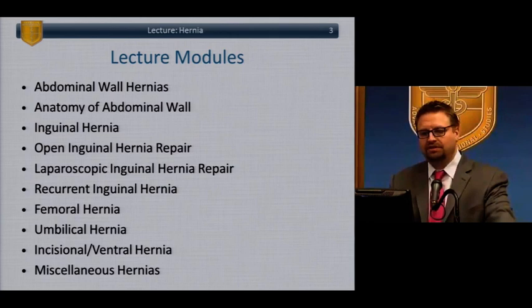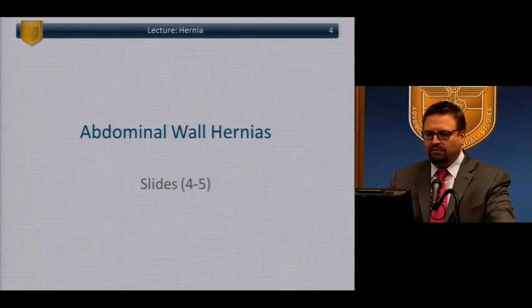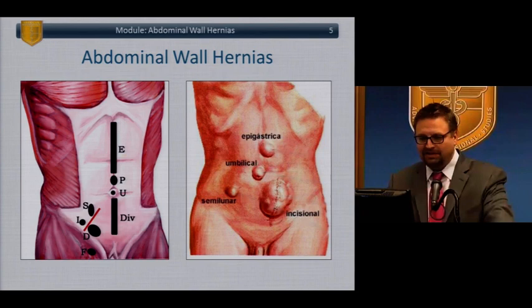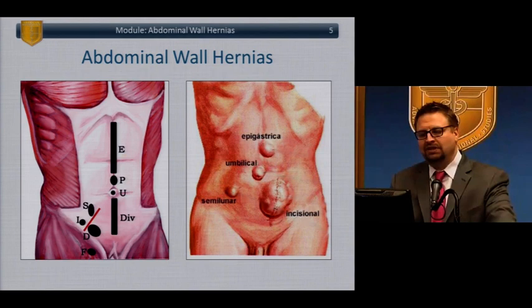We'll start with abdominal wall hernias. These are familiar to you all. We'll just remind ourselves of the common anterior abdominal wall hernias: epigastric, umbilical, incisional. In the picture on the right, you see the inguinal hernias, direct and indirect, and femoral, and also the semilunar or Spiegelian hernia.